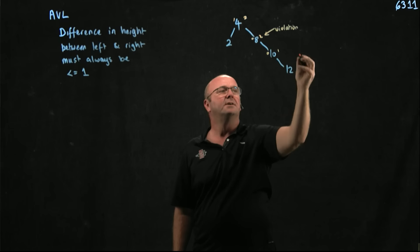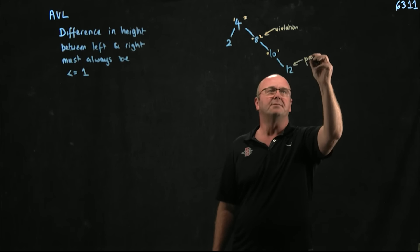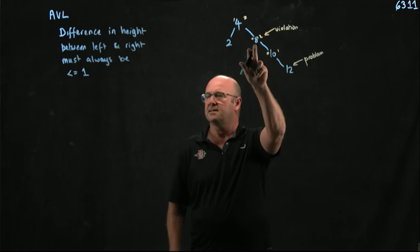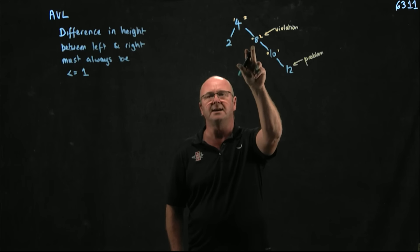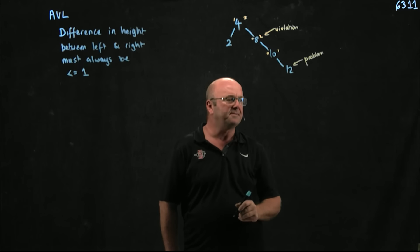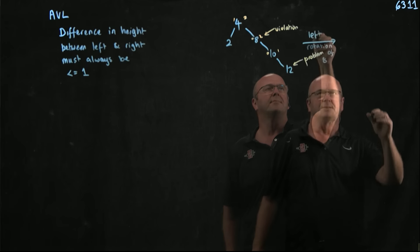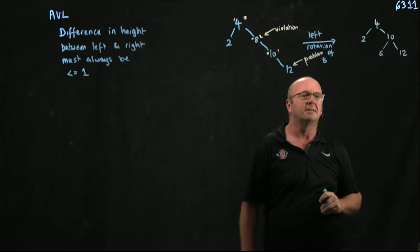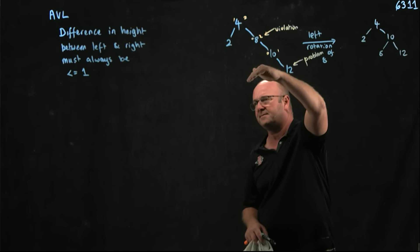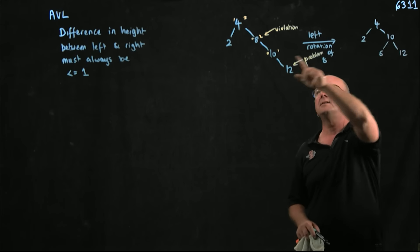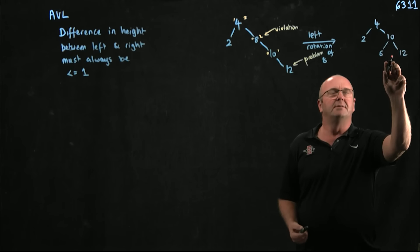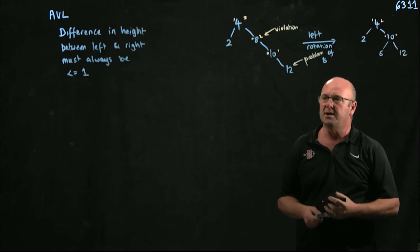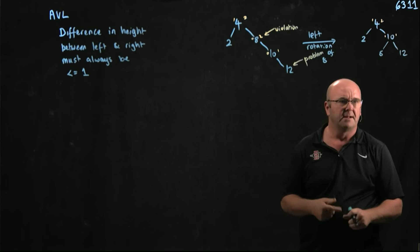The node that caused the problem is the twelve. To fix the violation, I rotate the grandparent. The twelve's grandparent is the eight, so I rotate the grandparent and do a left rotation. If I do a left rotation of the eight, I end up rotating the eight around the left of the ten and using the ten instead of the eight. Now at the ten I've got one child on either side. At the four I've got two children on the right and one on the left. So I've restored balance to my tree.